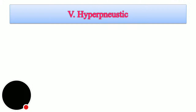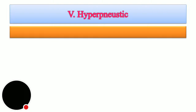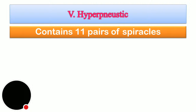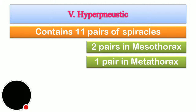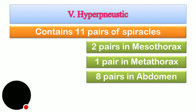In hypernoistic, hyper means more in number. While the normal count is 10 spiracular pairs, hypernoistic insects have more than 10. For example, there may be two pairs in mesothorax, one pair in metathorax, and eight pairs in abdomen — but this may vary. The key point is the number goes beyond 10 pairs, so hypernoistic contains more than 10 pairs of spiracles.